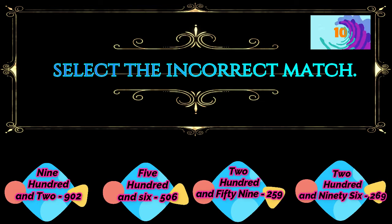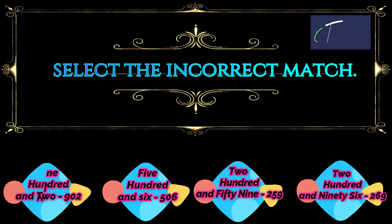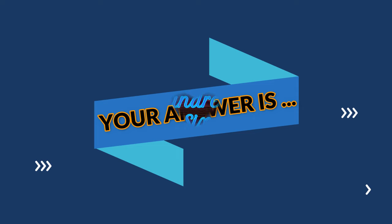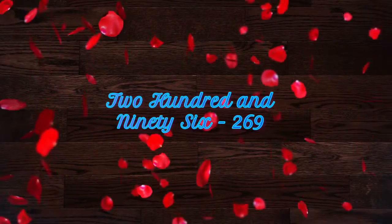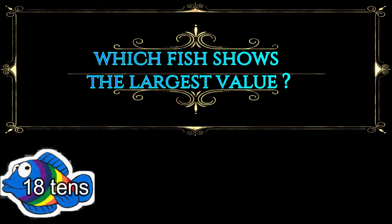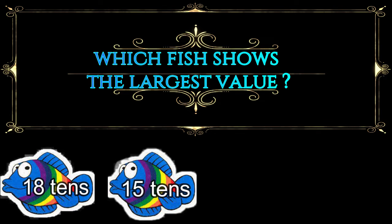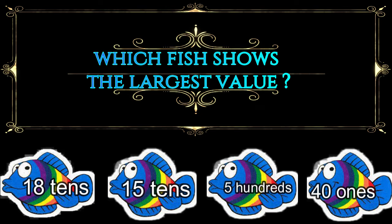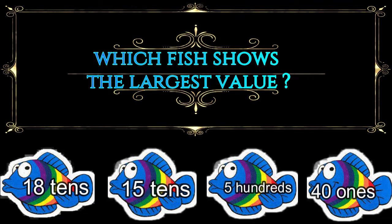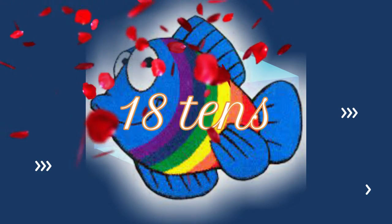Choose the correct option. Your time starts now and the answer is 296. Next question: Which fish shows the largest value? The options are: 18 tens, 15 tens, 500, or 41. Your time starts now. Your answer is 18 tens.